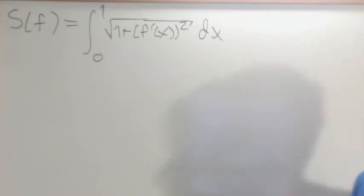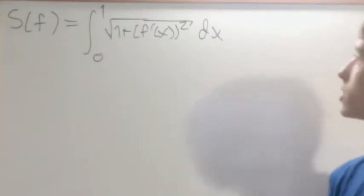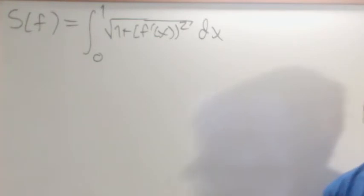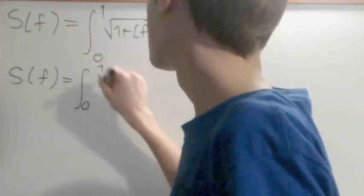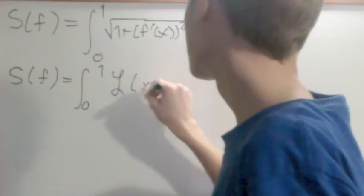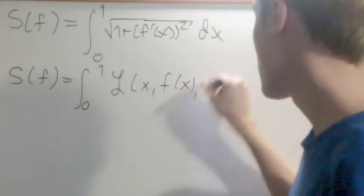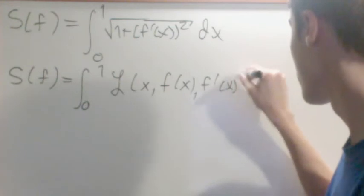Let's start off with the arc length, which is the integral from 0 to 1 of the square root of 1 plus f prime of x squared, dx. We could generalize this to S of f equals the integral from 0 to 1 of some L — a function that takes an x, f of x, and f prime of x — dx.